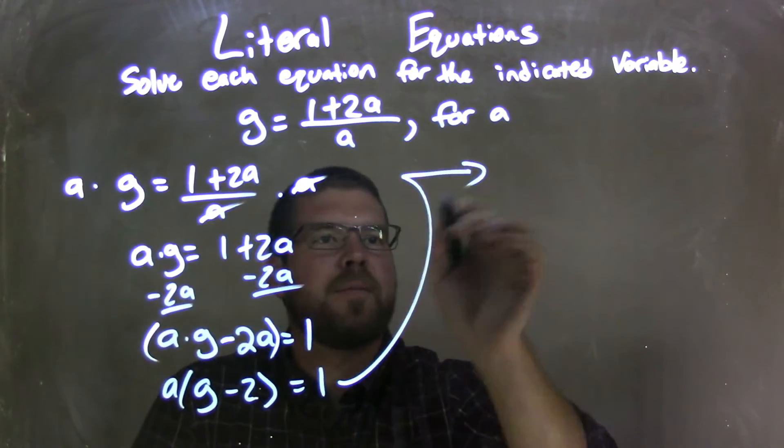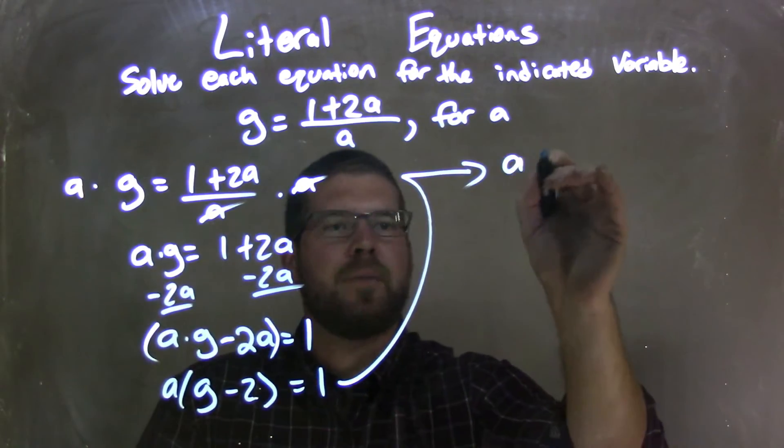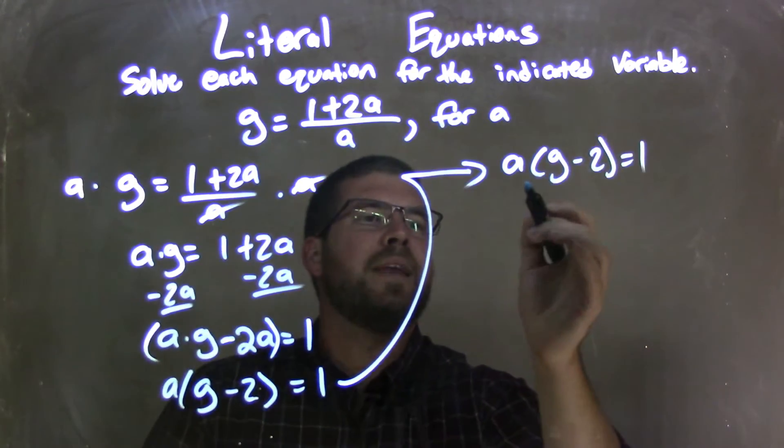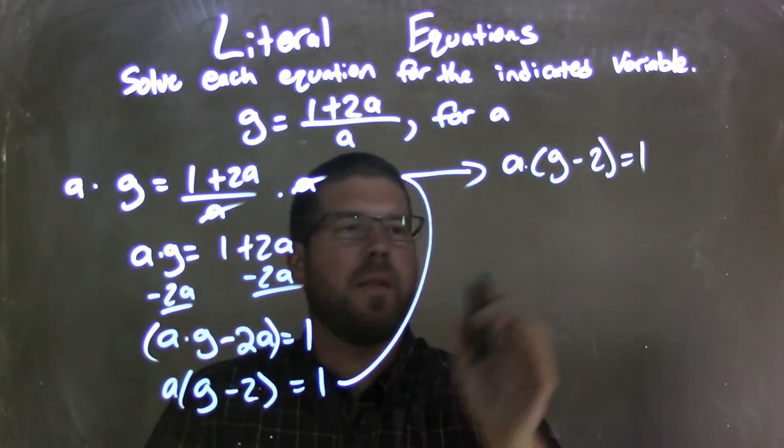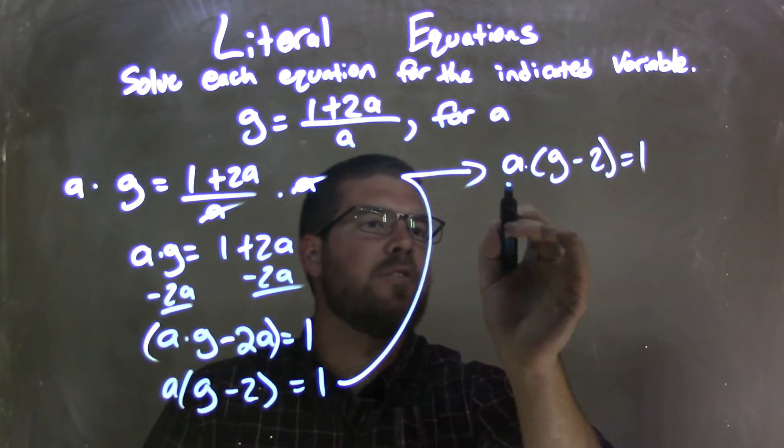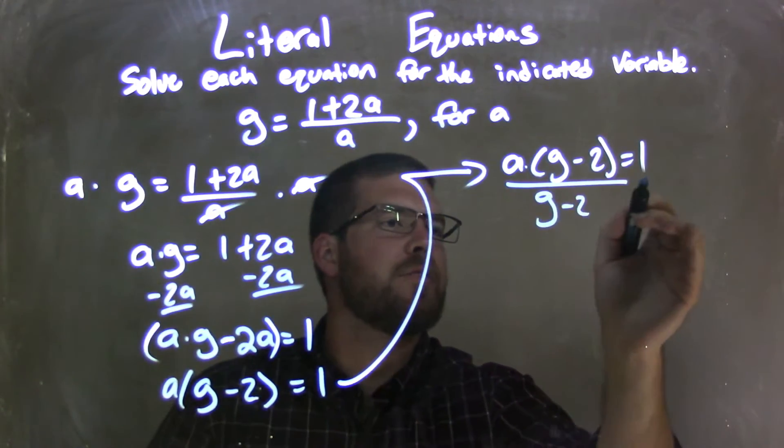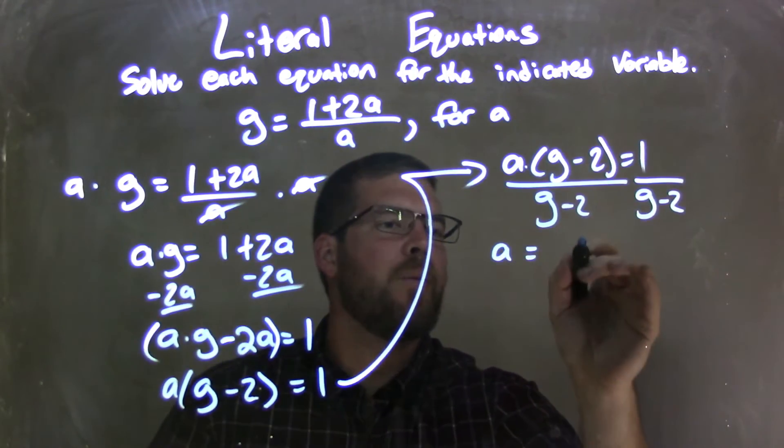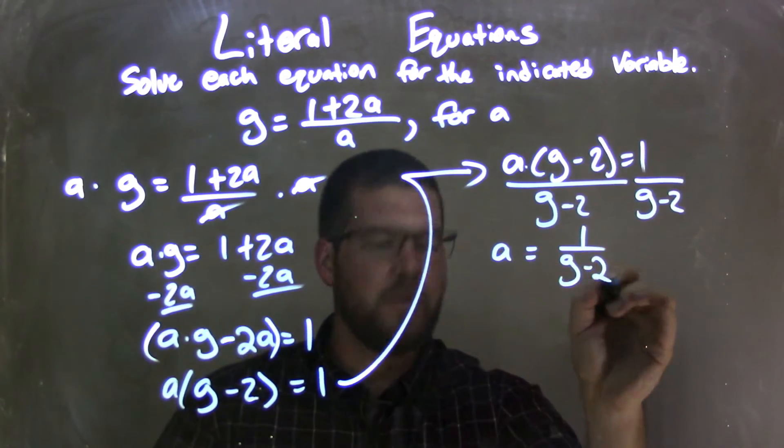So if I rewrite that step here, a times parentheses g minus 2 equals 1. So now I have multiplication going on there, between the parentheses and the a. So if I divide by g minus 2 to both sides, I'm left with a by itself, and whatever 1 over g minus 2 is.